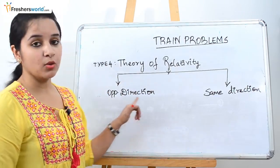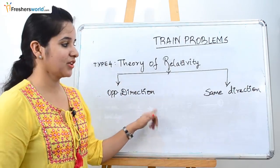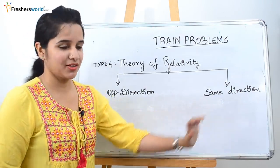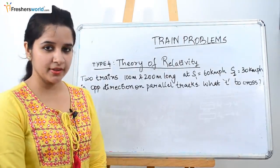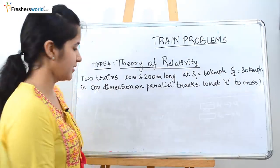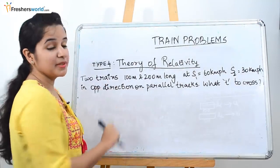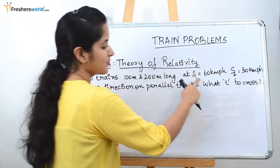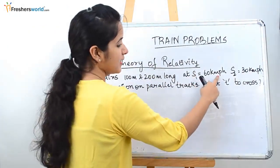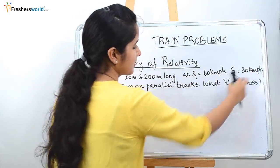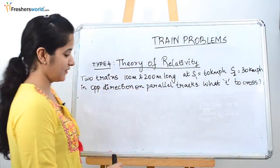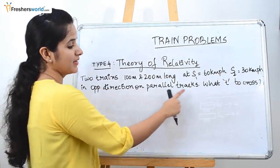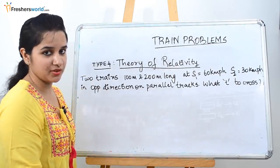There are two cases: train moving in opposite direction and train moving in the same direction. Problem number one in theory of relativity: two trains, 100 meters long and 200 meters long, travel at a speed of 60 kilometers per hour and 30 kilometers per hour respectively in the opposite direction on a parallel track. What is the time to cross each other?